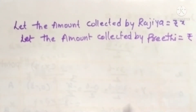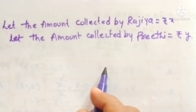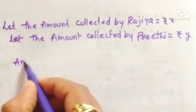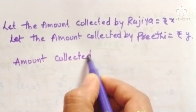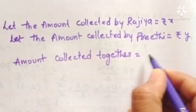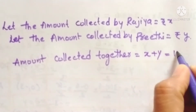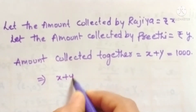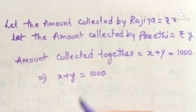Now, what is given in the problem? They together collected 1000 rupees. So the amount collected by both of them together equals X plus Y, and that equals 1000. So the linear equation is X plus Y equals 1000.